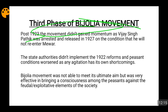The third phase was not very active. Vijay Singh Pathik was arrested and released only in 1927, under the condition that he would not enter Mewar. Since he was the main leader, his exclusion effectively removed him from the movement. Other people took up leadership roles — Jamnala Bajaj, for example — but they were not well known among the people, so their leadership was not very effective.